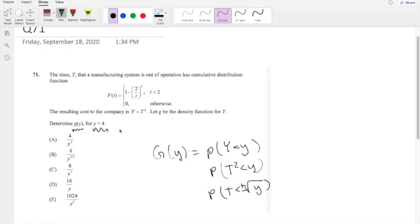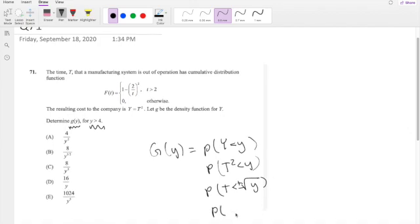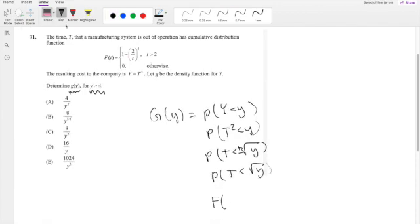But because we know that Y is greater than 4, we can just throw away that negative, so P of T is less than root Y. This is basically the CDF of F of T, but with T being equal to root Y. So this is equal to 1 minus 2 over root Y squared, because if T is less than some number, that's exactly the definition of the CDF.